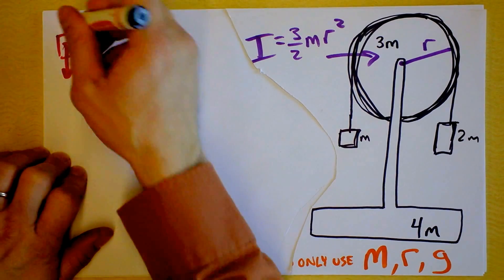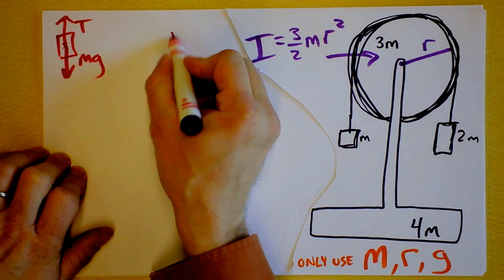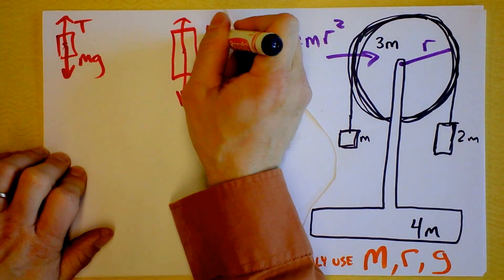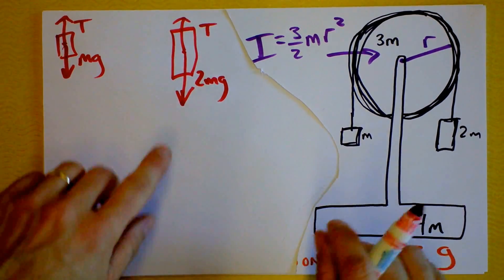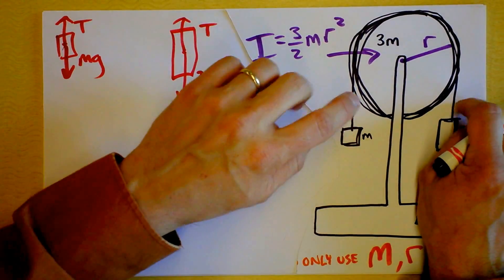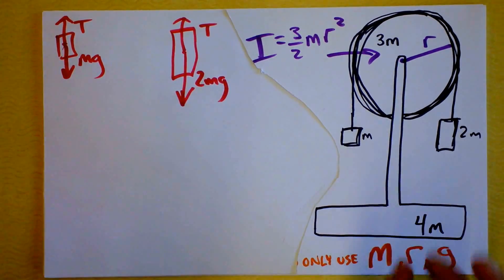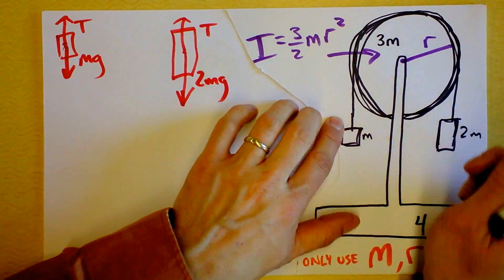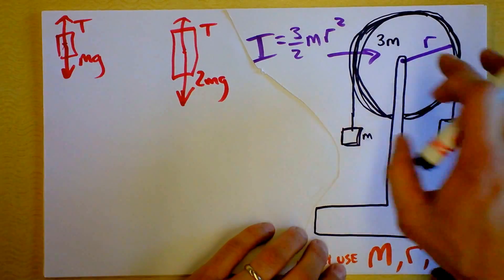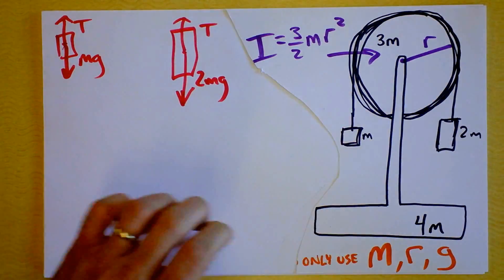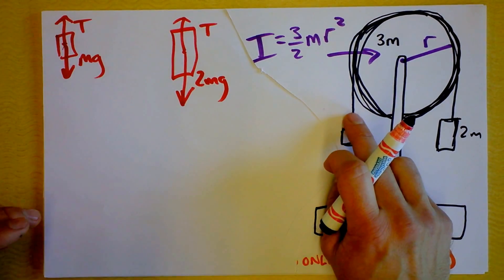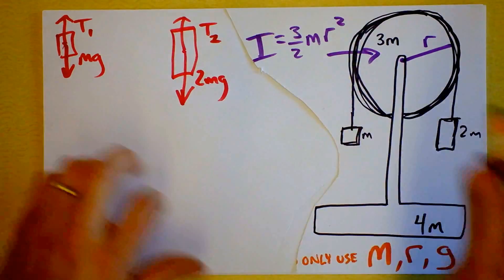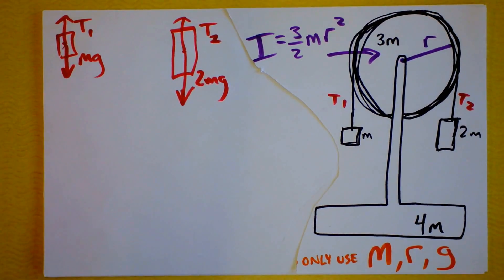So my first step is a free body diagram for this little M right here. This little M has Mg pointing down and there's also a tension pointing up. This other guy is twice as massive, so it's got a longer vector — 2Mg pointing down and a tension pointing up. I immediately become uncomfortable. Sometimes students want to say the upward pull on this one equals the weight of that one — that's nuts, you don't know yet. Those are two tensions on the same rope, but the rope might be causing this thing to rotate, so I'm going to call this T1 and this T2.